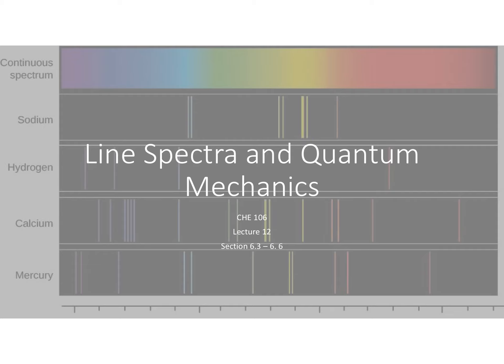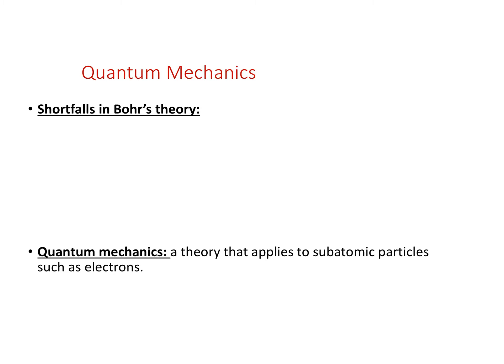In the last part of chapter 6, we're going to finally get to exactly where these line spectra come from and what they represent within the atom. There were a few shortfalls in the theory that Bohr put forth, but it was a good place to start. He had some good ideas about energy level transitions and discrete energy levels within the atom.